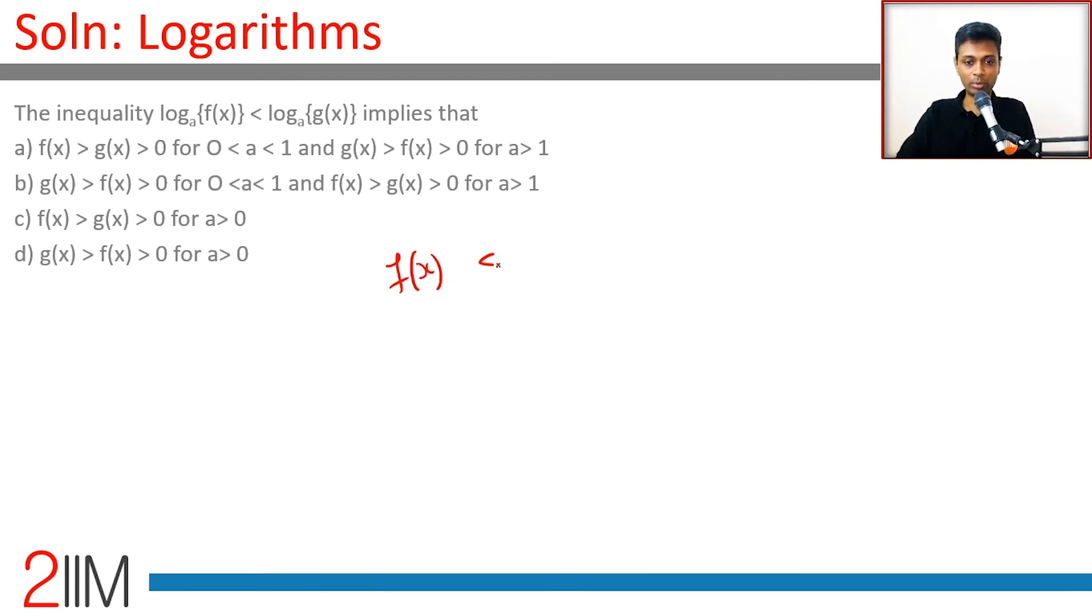So the base is important. This tells us quite beautifully that f(x) will be less than g(x) whenever a is greater than 1, and f(x) will be greater than g(x) for 0 < a < 1. Choice 1 is the correct answer.